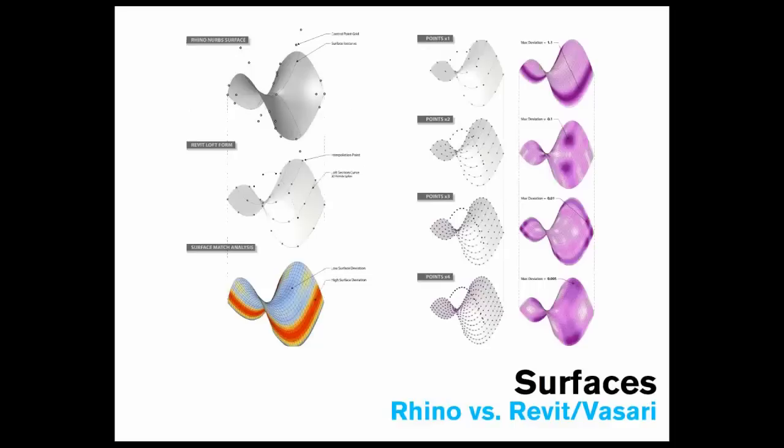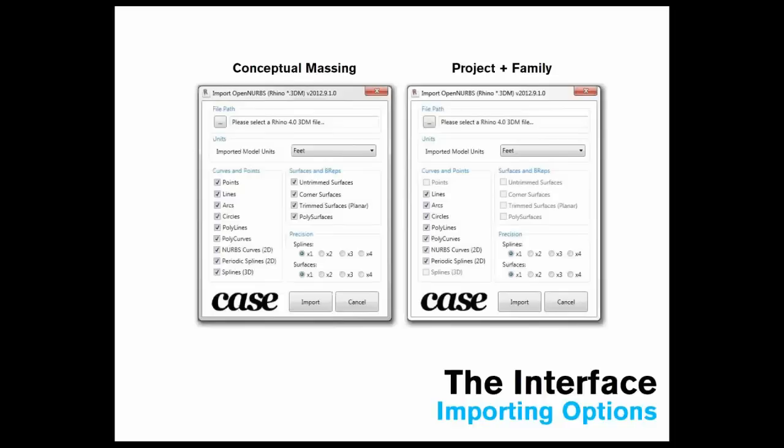The same goes with surfaces. As you're modeling surfaces, we encountered that the loft surface is not the same loft surface as it exists in the Rhino environment. A similar iterative method helps move the surfaces closer together in terms of deviation. You can see some of those techniques at work here, going from a max deviation of about 1.1 units down to 0.005 units in tolerance. These methodologies are built in under the hood of what eventually becomes a very simple interface that can be loaded through Revit and Vasari.